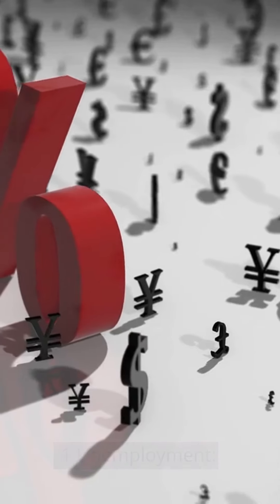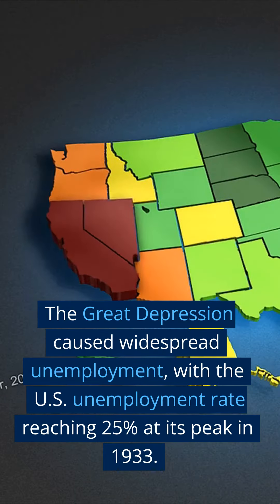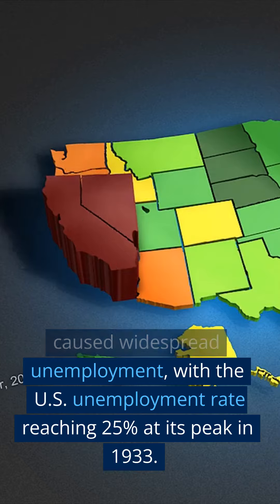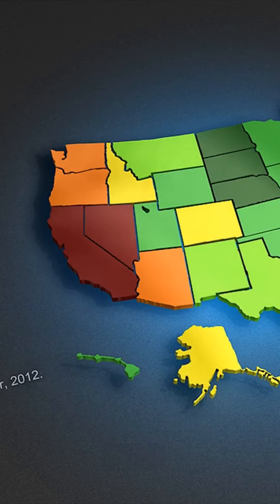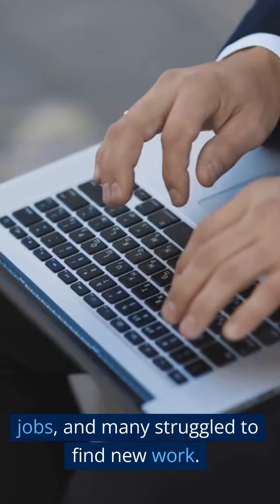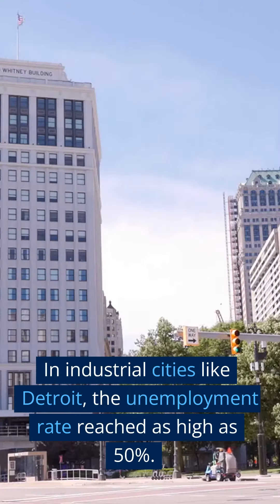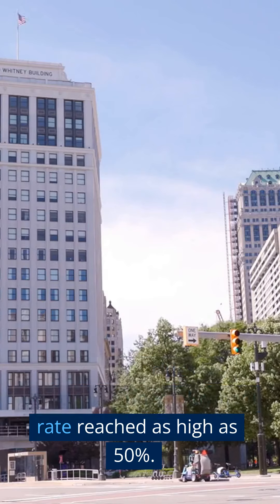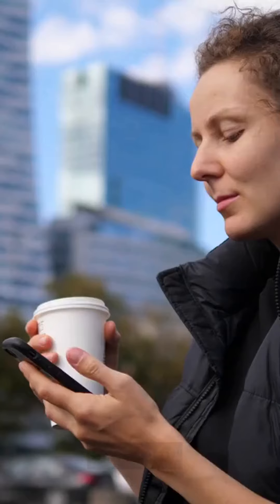Unemployment: The Great Depression caused widespread unemployment, with the U.S. unemployment rate reaching 25% at its peak in 1933. Millions of people lost their jobs, and many struggled to find new work. In industrial cities like Detroit, the unemployment rate reached as high as 50%.